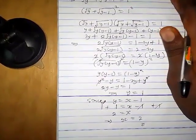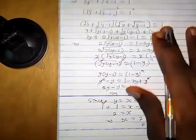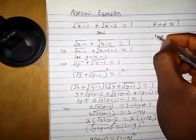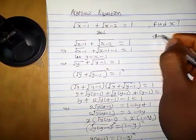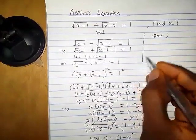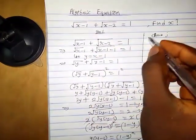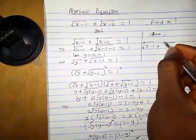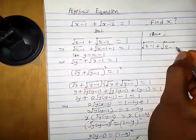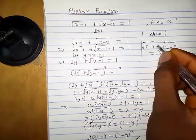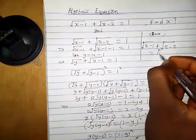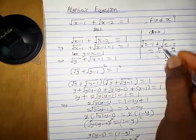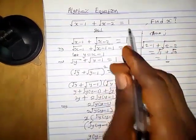Let's confirm our answer is correct. With x equals 2, we substitute into the original equation: square root of 2 minus 1 plus square root of 2 minus 2, which is square root of 1 plus square root of 0, which equals 1 plus 0, equals 1. This matches the right-hand side, confirming x equals 2 is correct.